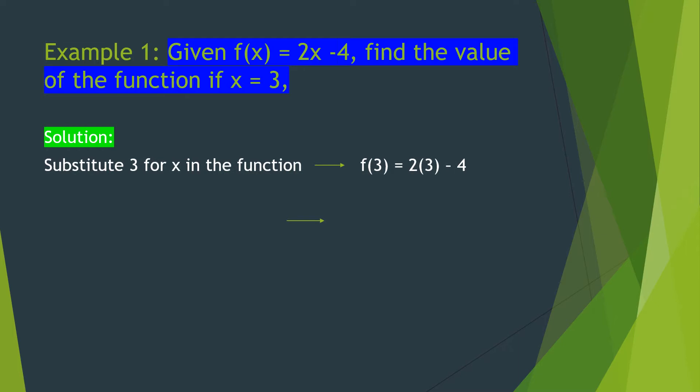Here is the solution. Substitute 3 for x in the function. So this is our function: f of x is equal to 2x minus 4. The value of x we are going to use is 3. That's why we have f of 3 is equal to 2 times 3 minus 4, replacing x with 3.